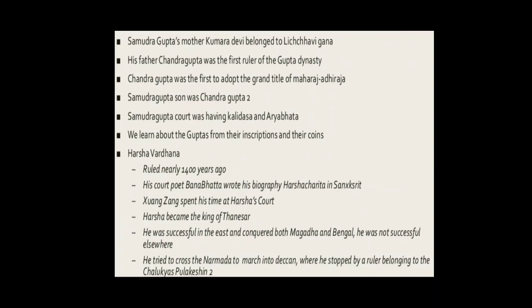Most Prashastis also mention the ancestors of the rulers. This one mentions Samudragupta's great-grandfather, grandfather, father, and mother. His mother, Kumara Devi, belonged to the Lichhavi Gana, while his father, Chandragupta, was the first ruler of the Gupta dynasty to adopt the grand title of Maharajadhiraja, a title that Samudragupta also used. His great-grandfather and grandfather are mentioned simply as Maharajas. It seems as if the family gradually rose to importance. Samudragupta, in turn, figures in the genealogies — a list of ancestors — of later rulers of the dynasty, such as his son, Chandragupta II.